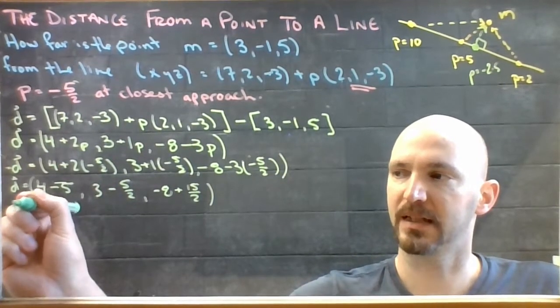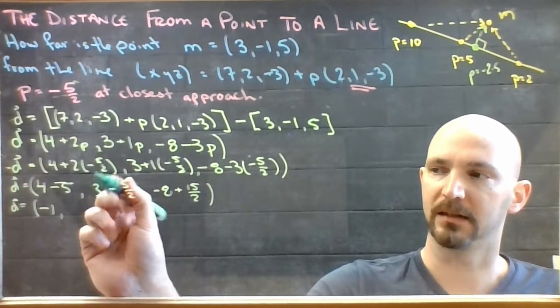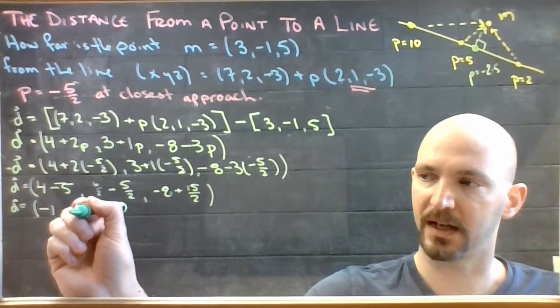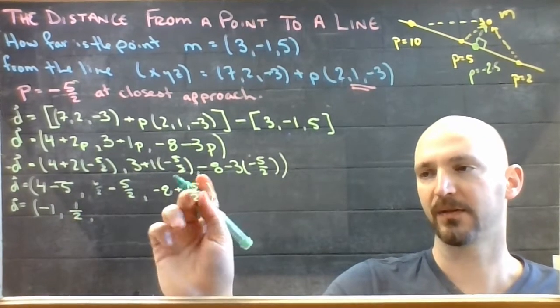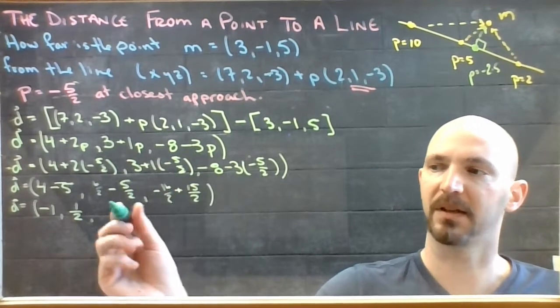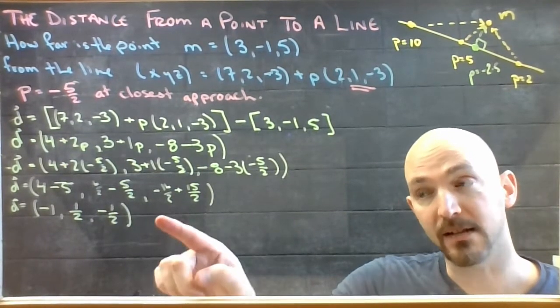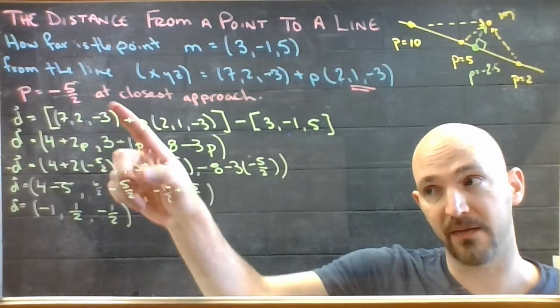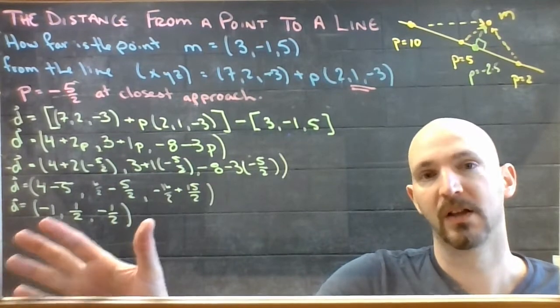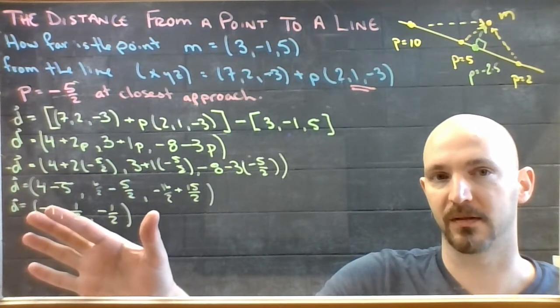The first one is easy: 4 - 5 is -1. This would be 6/2 minus 5/2 leaves me with 1/2. -16 + 15 would be -1/2. So at closest approach, when P is -5/2, this vector connecting the line and the dot has these coordinates. That's the instructions, that's how I get from the line to M at the shortest approach.